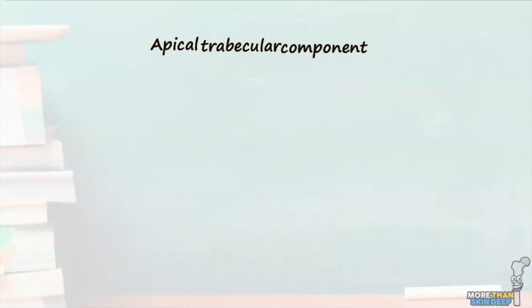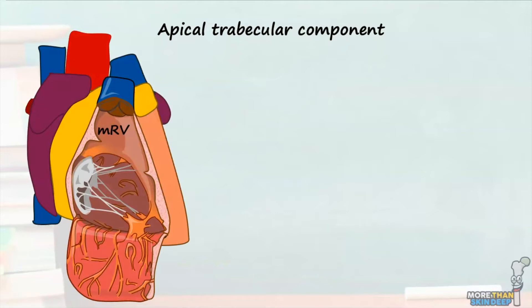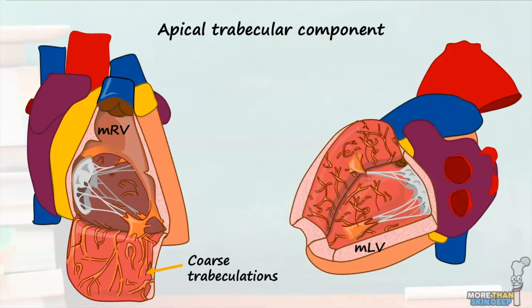If we first consider the morphologically right ventricle as seen in this image where I've reflected the right ventricular wall inferiorly, we can see that the right ventricle contains very coarse trabeculations which can even appear as large chunks of muscle in some individuals. In contrast, the morphologically left ventricle as seen in this image contains fine criss-cross trabeculations which are much more intricate than the right ventricle.